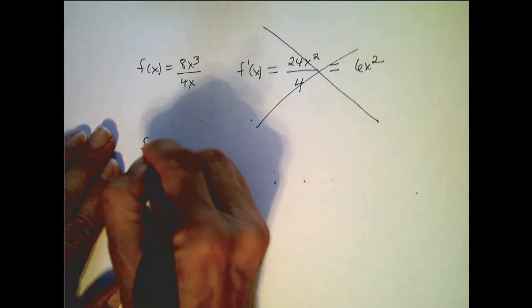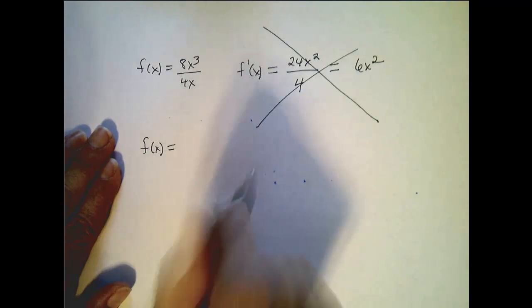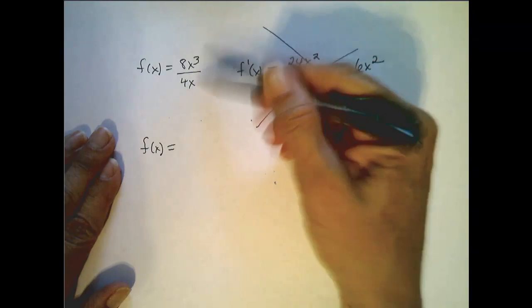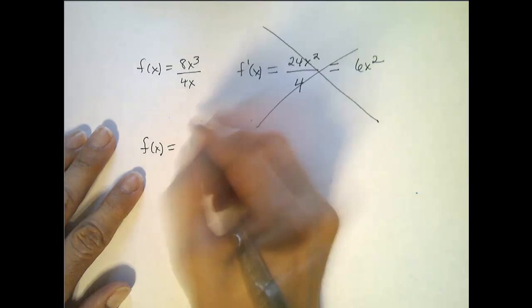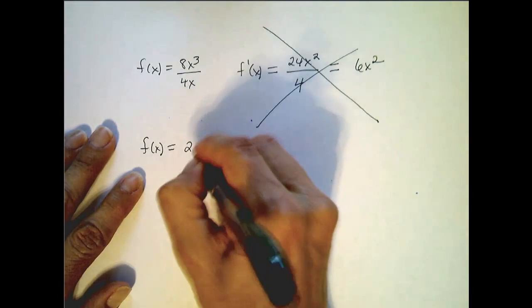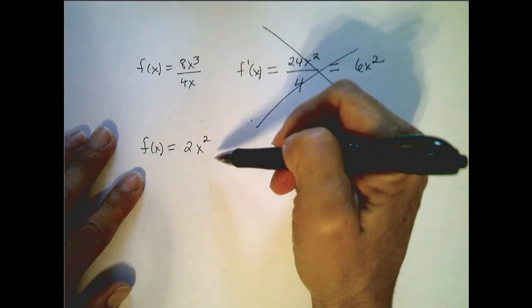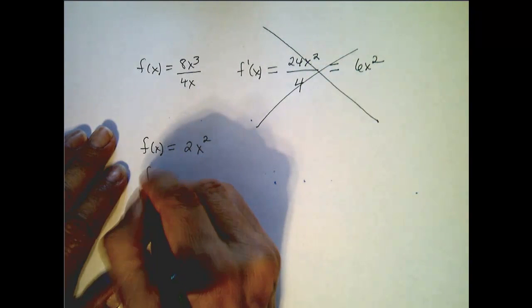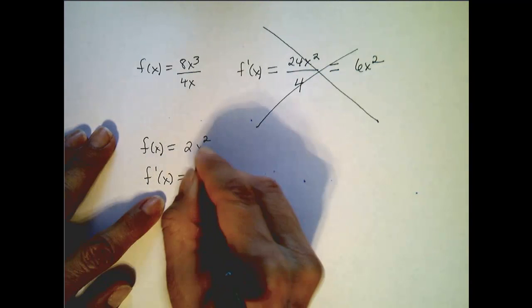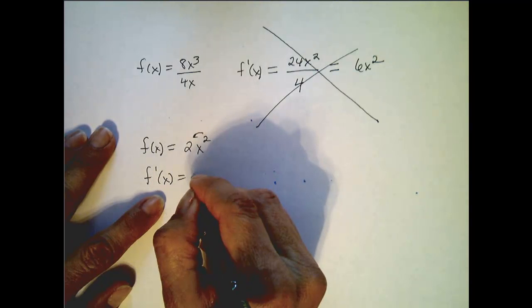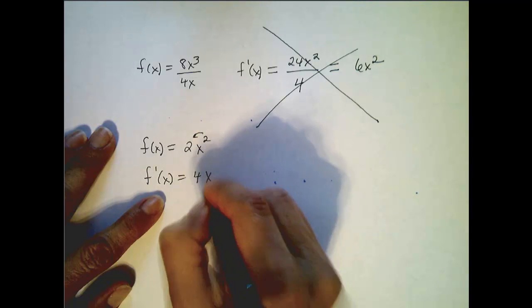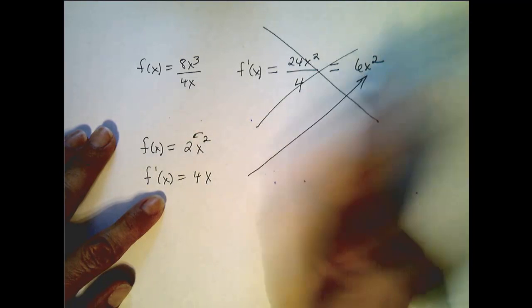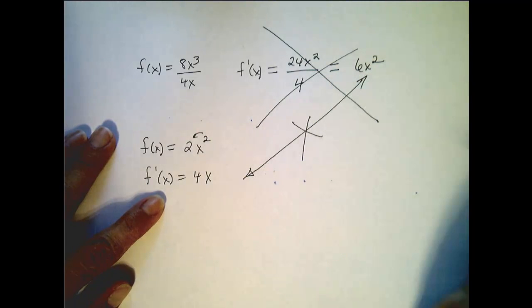Let's apply something we already know to figure out exactly what the derivative is. If I were to simplify this, 8 goes into 4 twice, this becomes x². So 8x³ over 4x is really 2x². And what I do know is its derivative is, by the power rule, 2 times 2, or 4x. Those two are clearly not always equal.